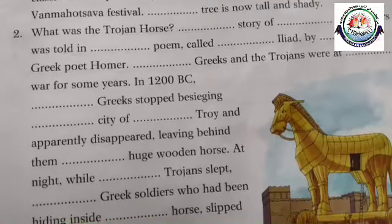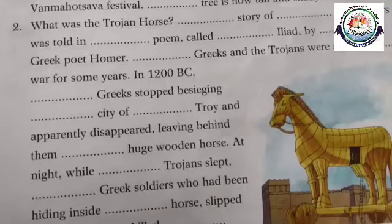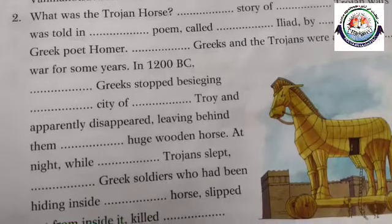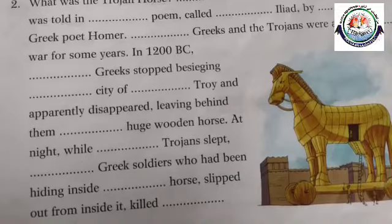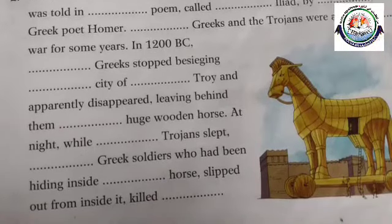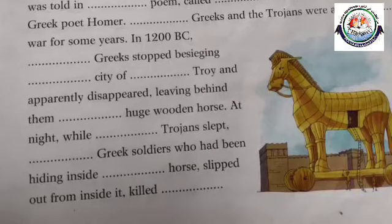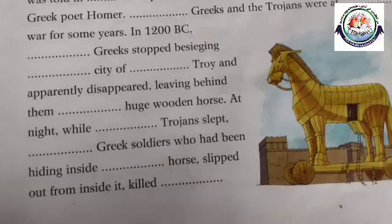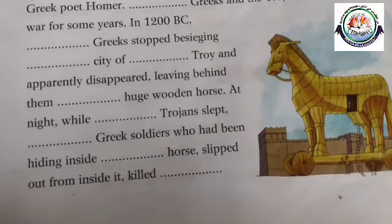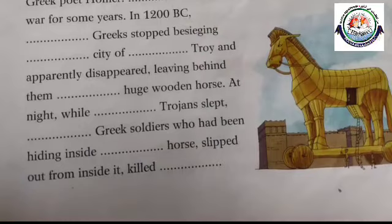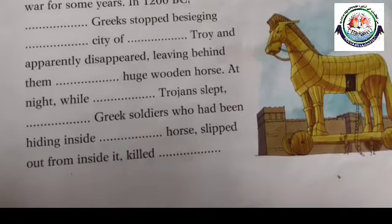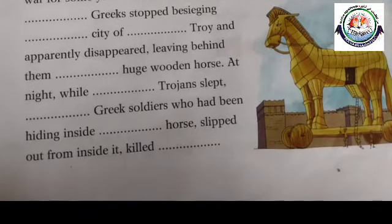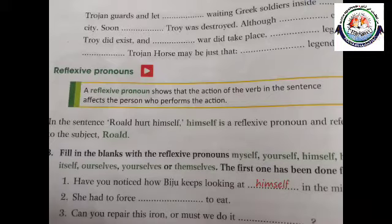What was the Trojan horse? A story of the Trojan War was told in the poem called the Iliad by the great poet Homer. The Greeks and the Trojans were at war for some years. In 1200 BC, the Greeks stopped besieging the city of Troy and apparently disappeared, leaving behind them a huge wooden horse. At night, while the Trojans slept, the Greek soldiers who had been hiding inside the horse slipped out from inside it, killed the Trojan guards and let the waiting Greek soldiers inside the city.